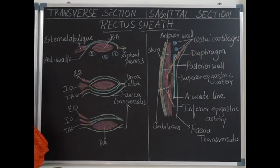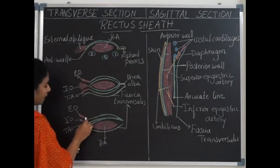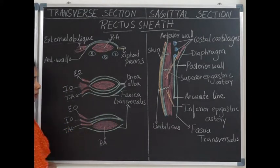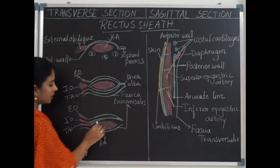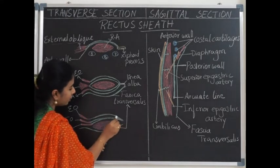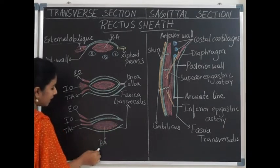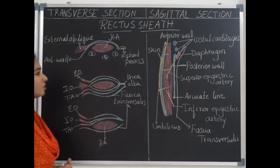These two form the posterior wall of the middle part of the rectus sheath. Below the arcuate line, the posterior wall is deficient again. The anterior wall is formed by all three muscles: the external oblique aponeurosis runs separately to merge with the linea alba, and the internal oblique and transversus abdominis aponeuroses merge to form a single sheath running anterior to the rectus abdominis. Posteriorly, the rectus abdominis muscle rests directly on the fascia transversalis.